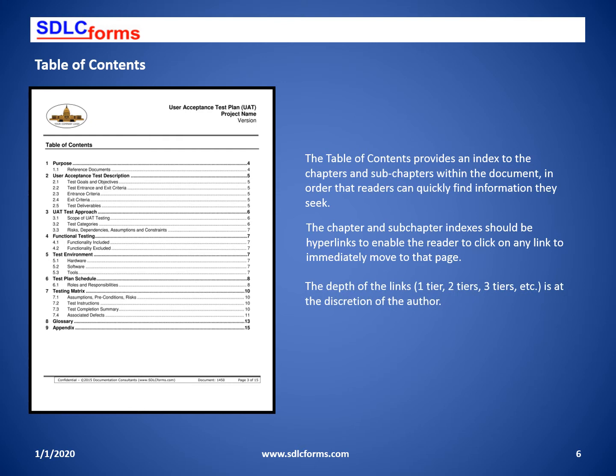The table of contents allows people to quickly determine the scope and volume of the document and find topics and subtopics of interest to them by clicking on that topic to move to the desired page.